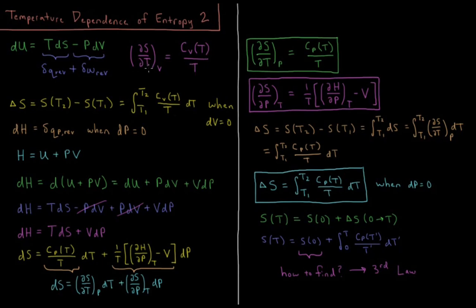In this video, we're going to look at the same thing for constant pressure processes and go through that derivation. The change in entropy that occurs between two temperatures — entropy being a state function — is the entropy of the final temperature minus the entropy of the initial temperature, which we derived was equal to the integral from T1 to T2 of the constant volume heat capacity divided by T, integrated with respect to T. And that's when dV equals zero, or constant volume processes.